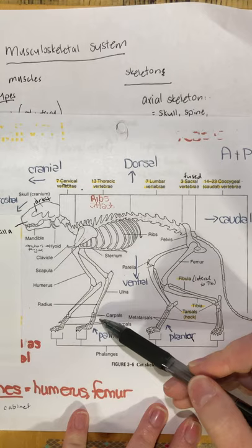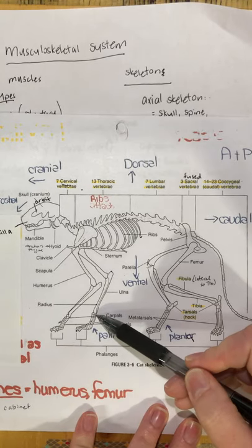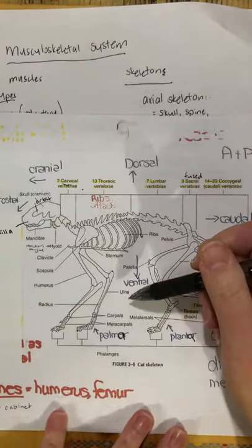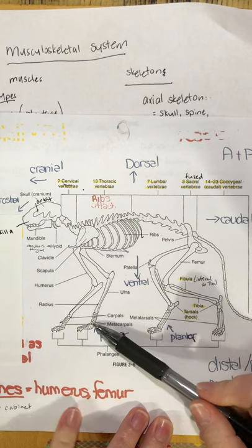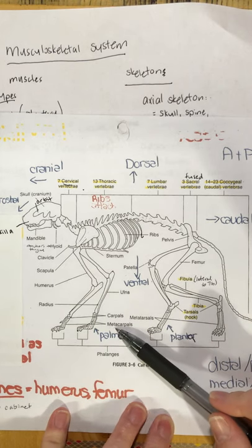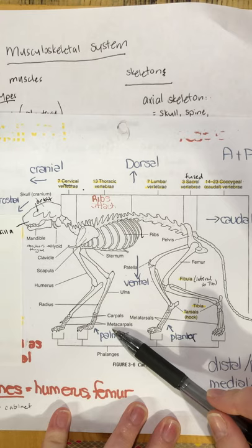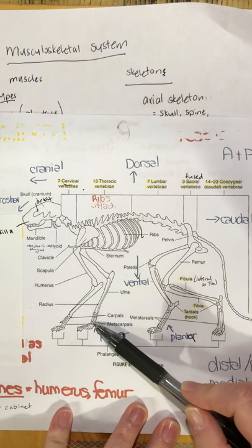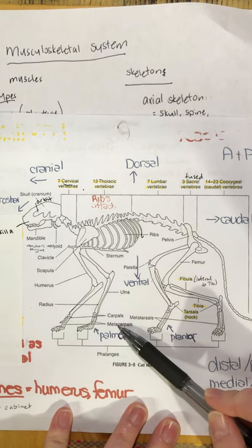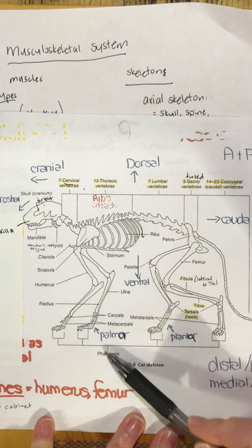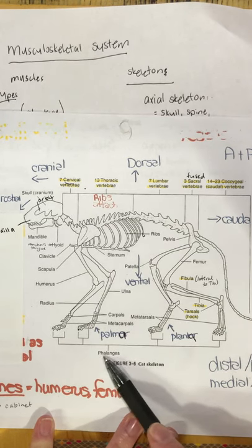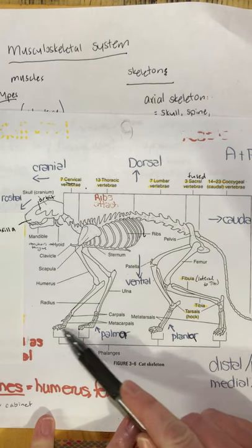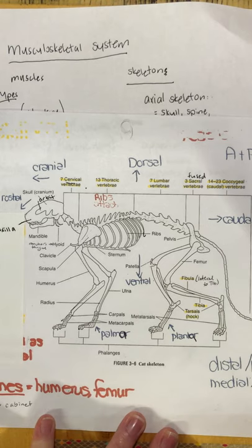Moving a bit more distal, we have the carpals — like the wrist. 'Carp' means wrist from our word parts. Beyond that are the metacarpals — 'meta' means beyond, so beyond the carpals. And then lastly we have the phalanges. Phalanges is plural — one individual is a phalanx — but typically we talk about them together. The phalanges are the toes.